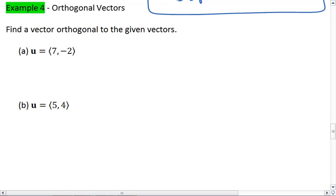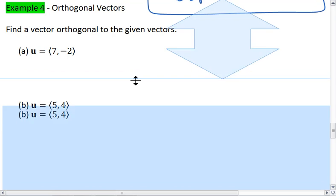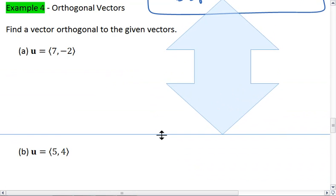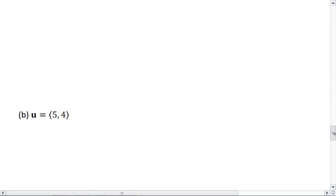Given vector u, I want you to find a vector that is orthogonal to the given vector. Just so you know, there are multiple possible answers here. If you want to, try this one on your own first. I know I'm not giving you much direction. If you're confused, resume the video, look through the answer for part a, and then you can try part b on your own.